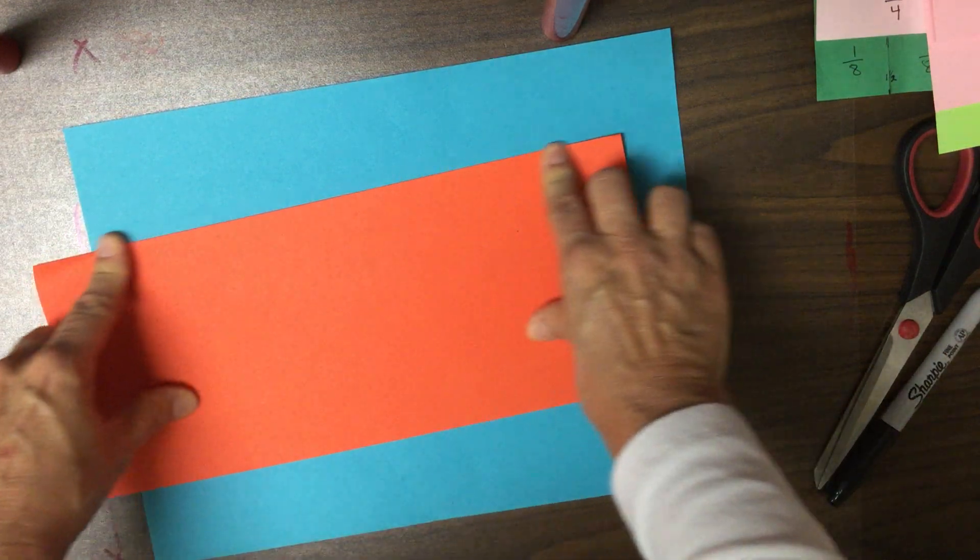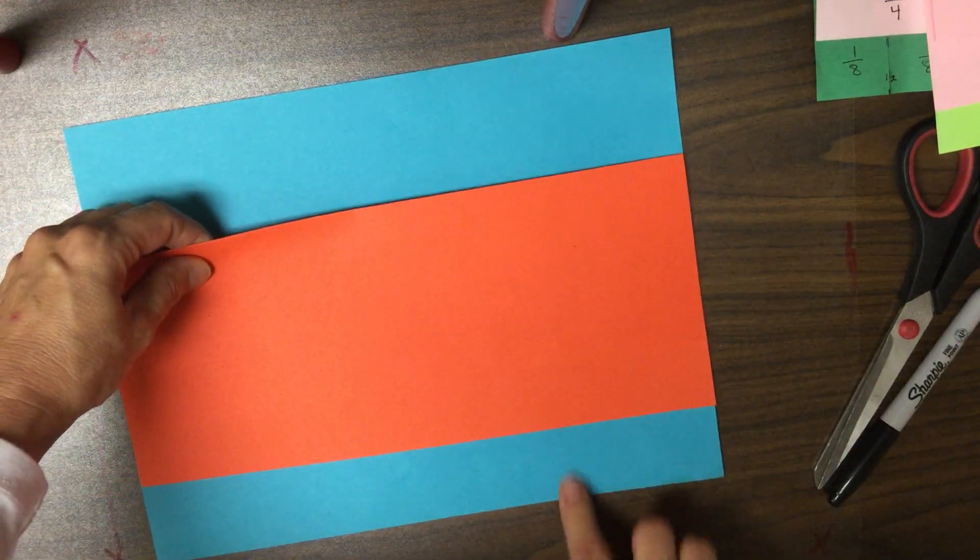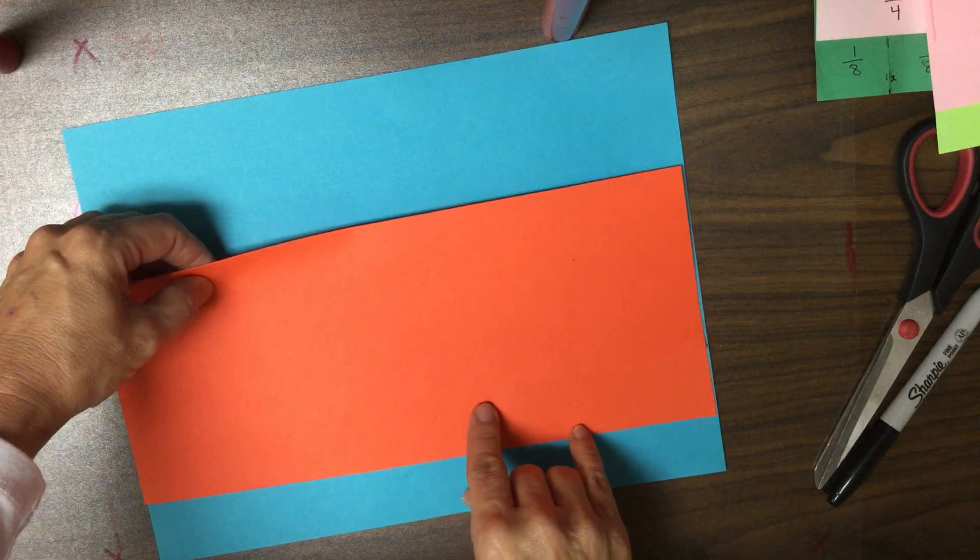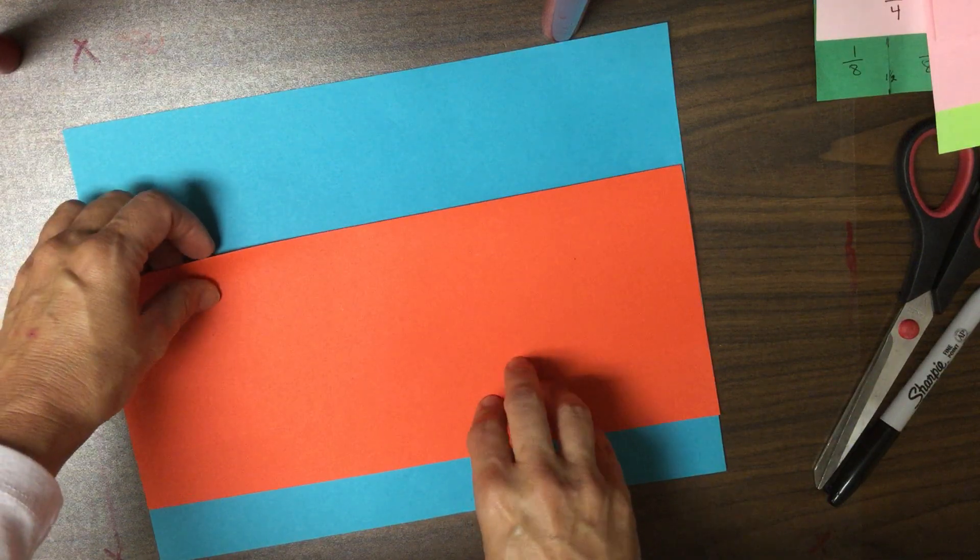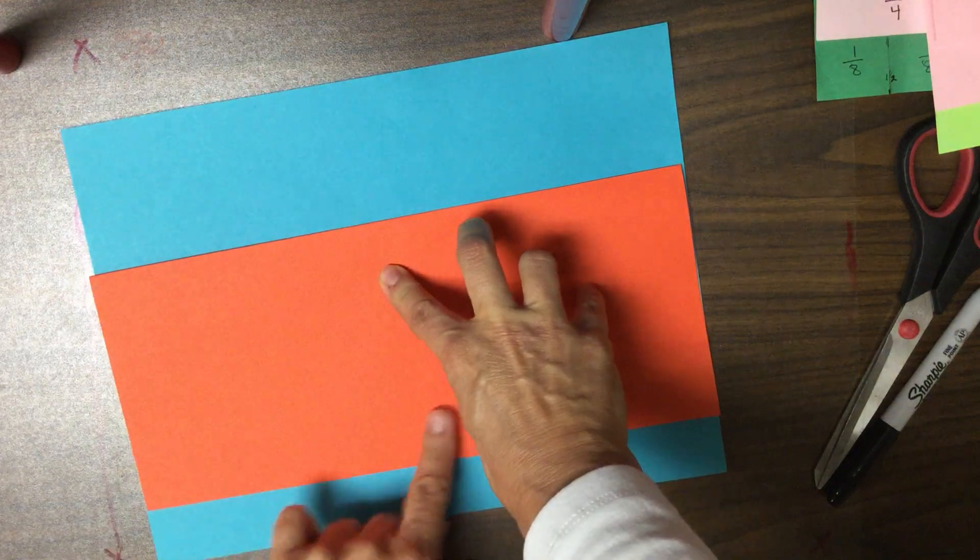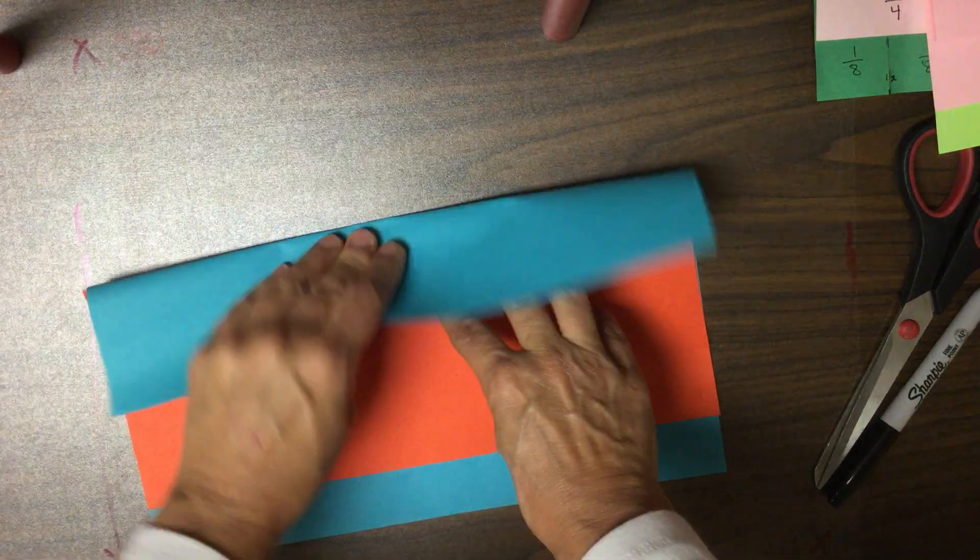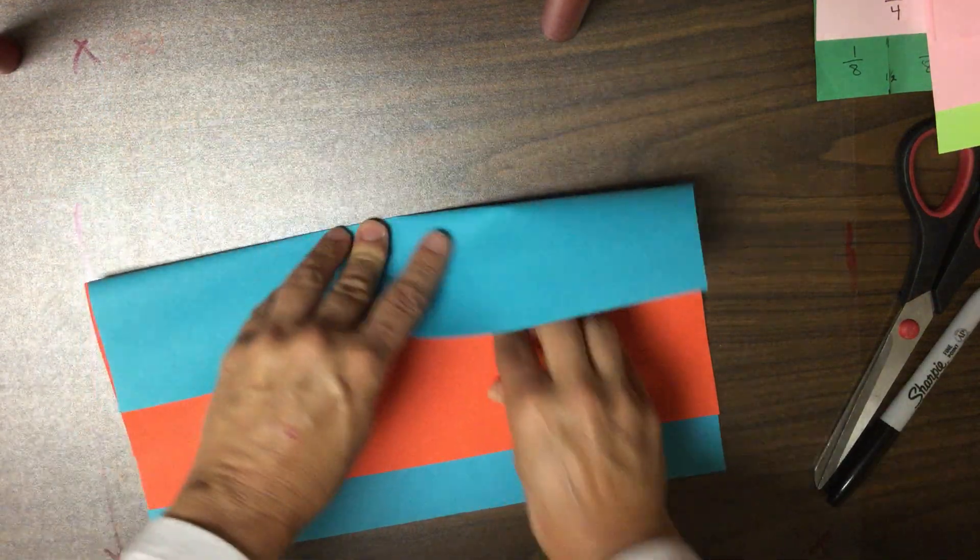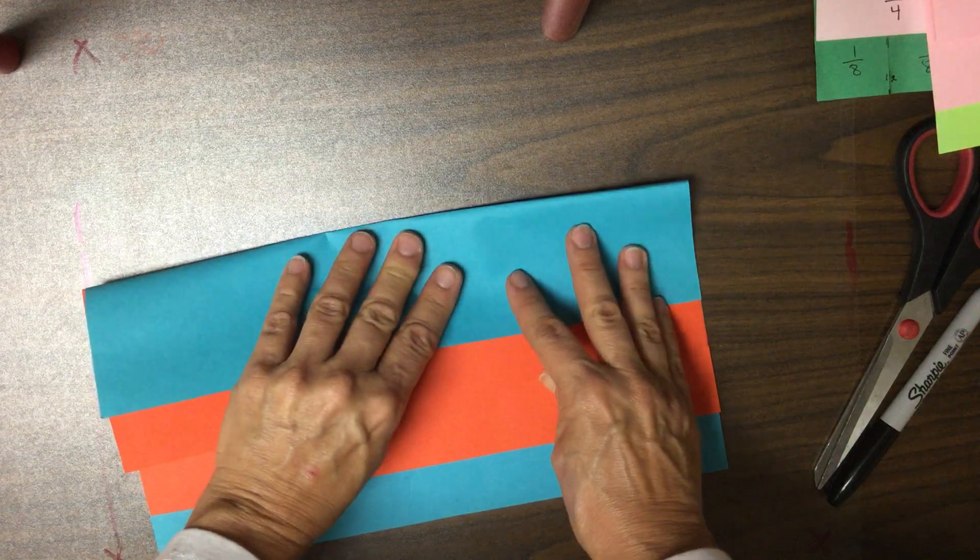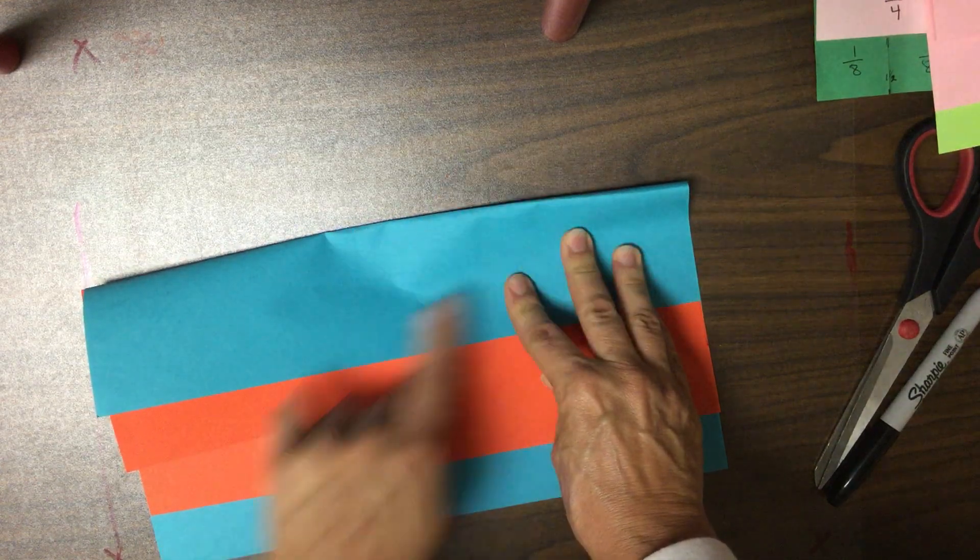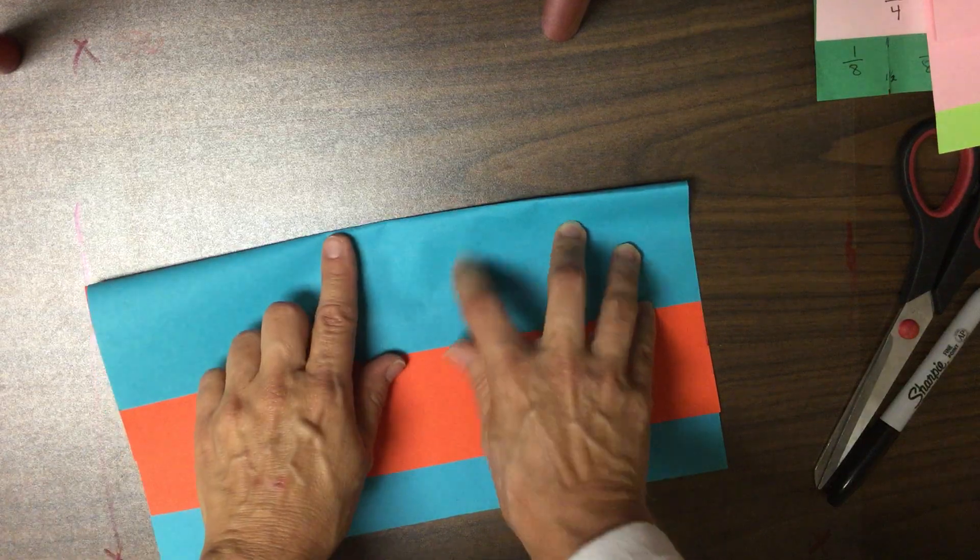Then I'm going to leave about an inch here on the bottom and then an inch on the bottom with the blue. I'm going to fold it as close to this as I can, making sure that my edges here are as straight as possible.